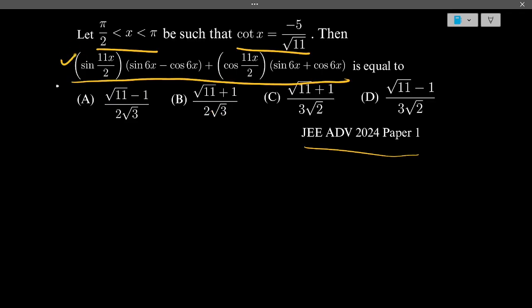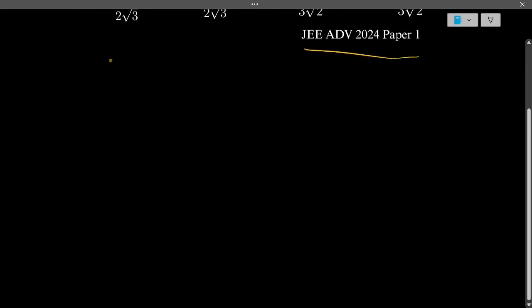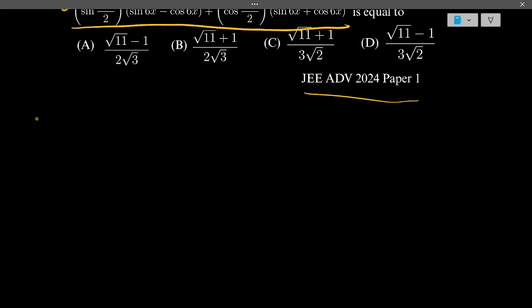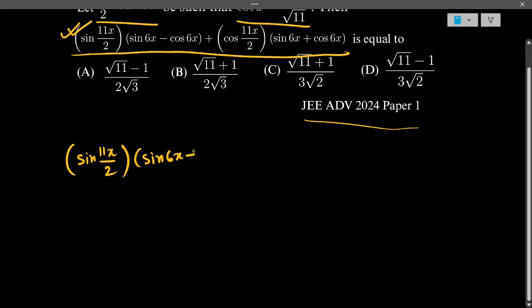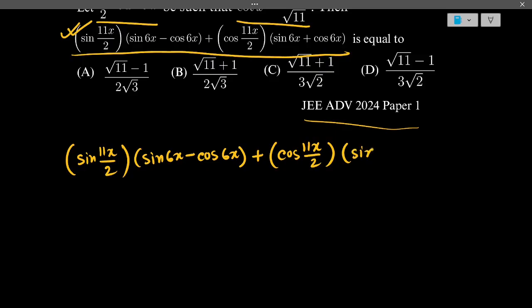Now let's start solving this question by rewriting this quantity. This is sin(11x/2)(sin 6x - cos 6x) + cos(11x/2)(sin 6x + cos 6x).